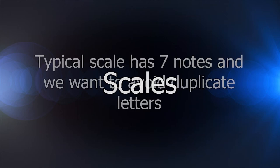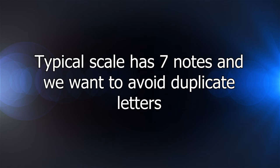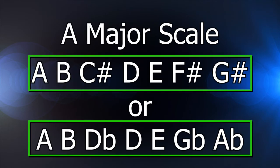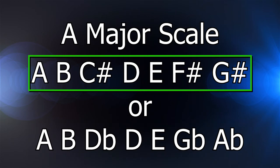But the basics are a typical scale contains 7 notes, and because we can change between sharps and flats, we can assure the scale doesn't have duplicate letters. For example, the A major scale could be written these two ways. In this case, we would want to pick the sharp version because it maintains A, B, C, D, E, F, G.